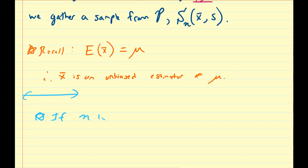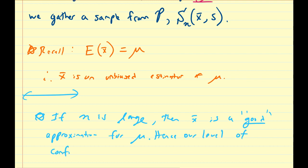If n is large, then x̄ is a good approximation for μ. Hence, our level of confidence should be large for estimating μ.